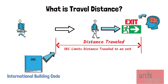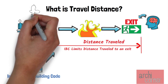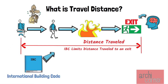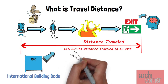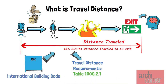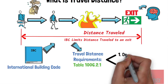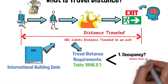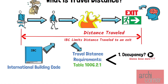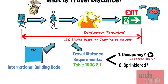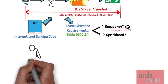This makes a lot of sense. Imagine being stuck in a building that is so long or so large that you wouldn't be able to reach an exit on time — not a good thing. Similar to many egress requirements in the IBC, the travel distance requirements are different for every building. You can find the requirements in IBC Table 1006.2.1. The distance depends mainly on two things: the occupancy of the building, and whether the building has fire sprinklers. Buildings with fire sprinklers allow for a longer travel distance.